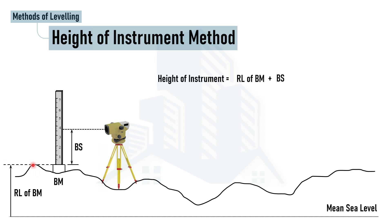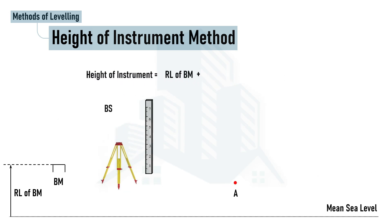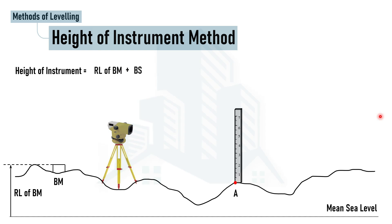The reduced level at the benchmark is known; we simply add the back sight reading and we get the height of instrument — the reduced level of the horizontal axis of the instrument. Now we want to determine the reduced level of different points. For point A, we put the staff at that point and note down the staff reading at point A.